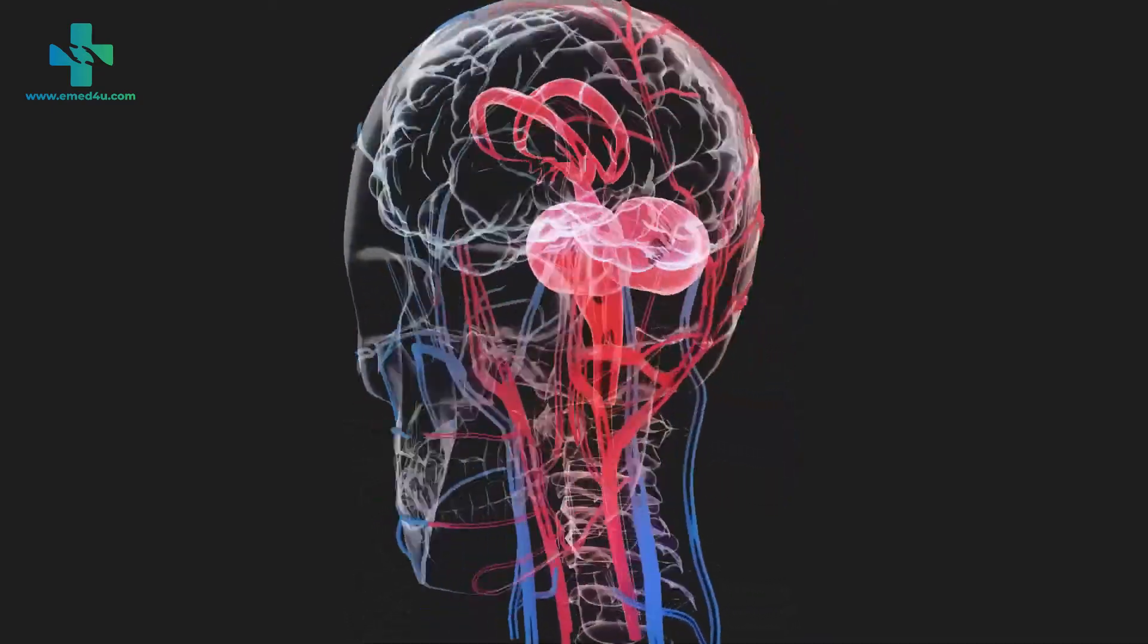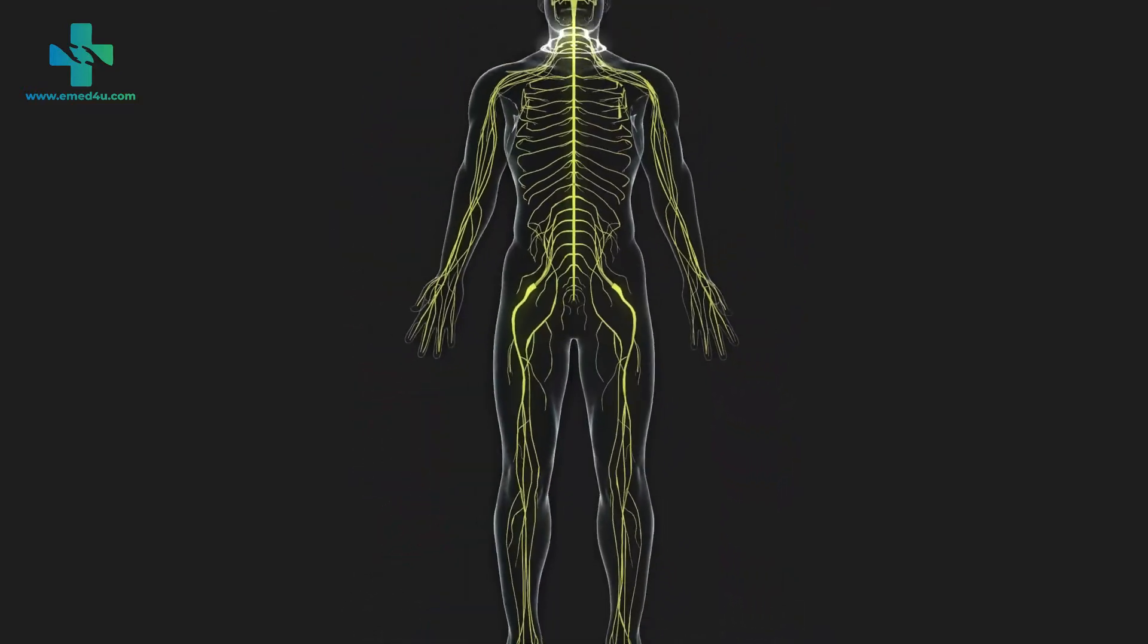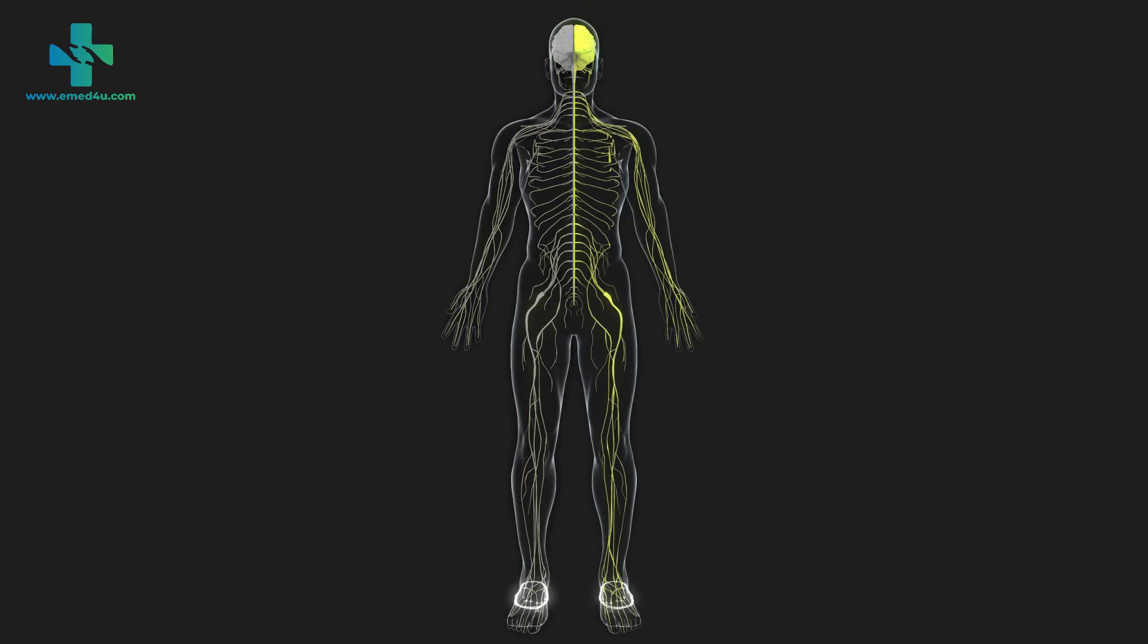The resulting symptoms of a stroke vary depending on the blood vessel involvement and the area of the brain it supplies. Some common symptoms include weakness and a loss of sensation on the side of the body opposite to the side where the stroke had occurred.